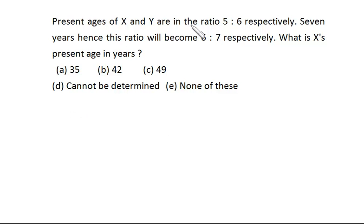Now, present ages of X and Y are in the ratio 5:6. Seven years hence, the ratio will be 6:7. What is X's present age? This is present age of X and Y.